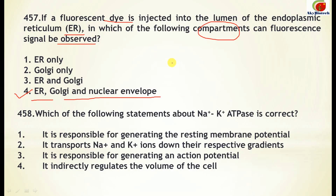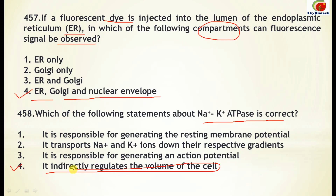Question 458: Which of the following statements about sodium-potassium ATPase is correct? It is not responsible for generating the resting membrane potential; it does not transport sodium and potassium ions down their respective gradients; it is not responsible for generating an electron potential. The correct option is: it indirectly regulates the volume of the cell.